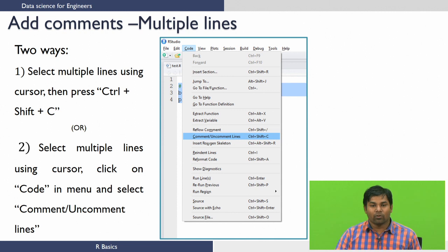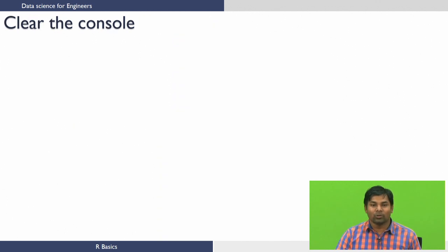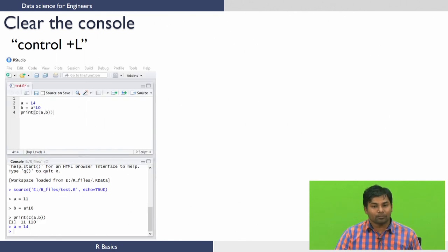In some cases when you run the codes using Source and Source with Echo, your console will become messy, and it's needed to clear the console. Let us now look at how to clear the console. The console can be cleared using a shortcut key Control + L. Let's look at an example. In this code I've defined a and calculated b, and printed a comma b. When I execute this code using Source with Echo, all the commands will get printed here.